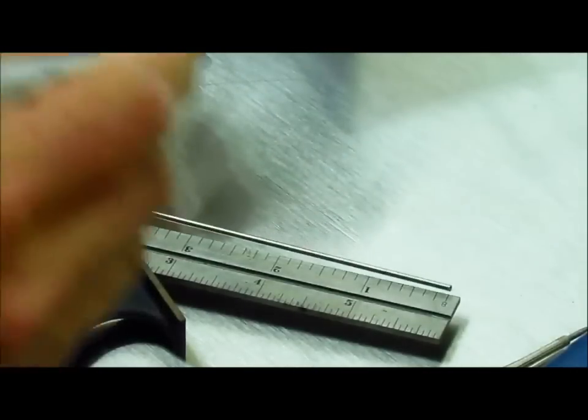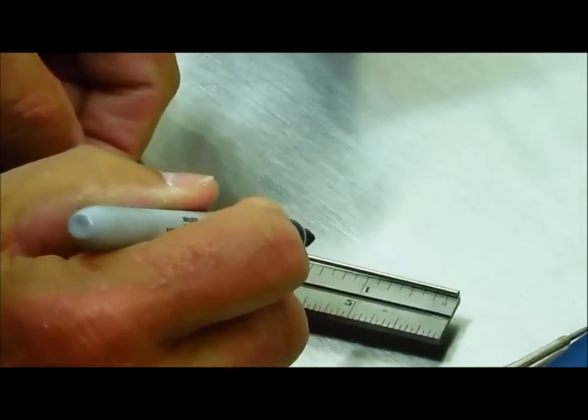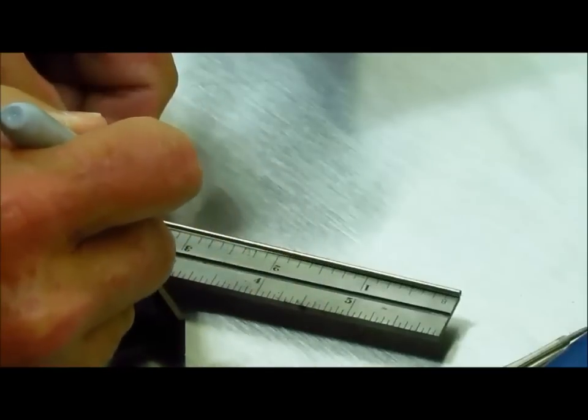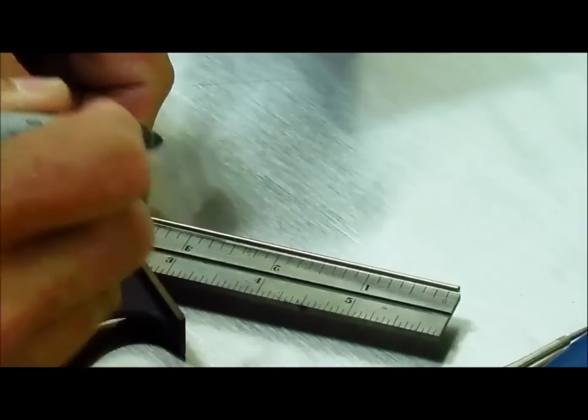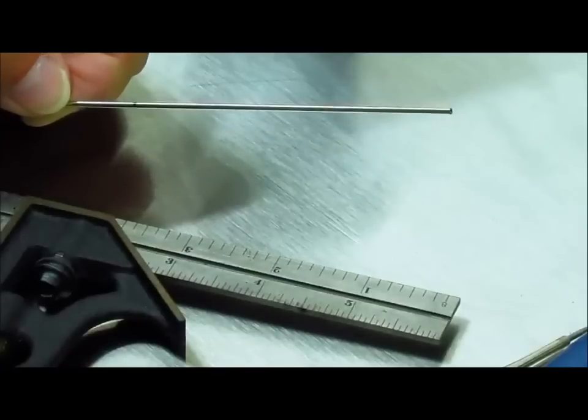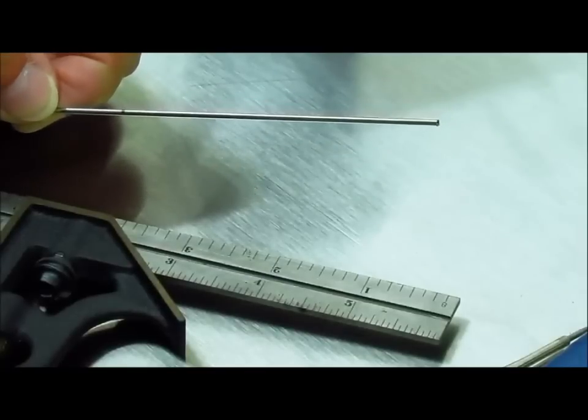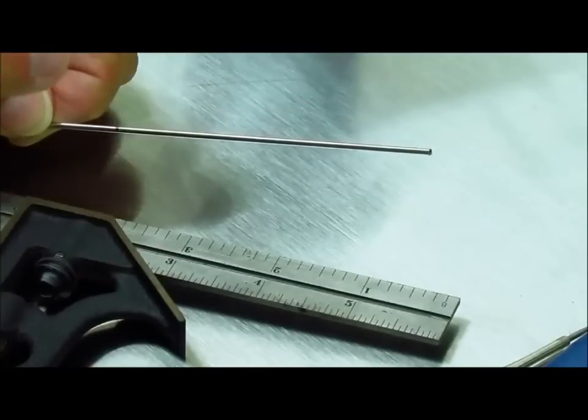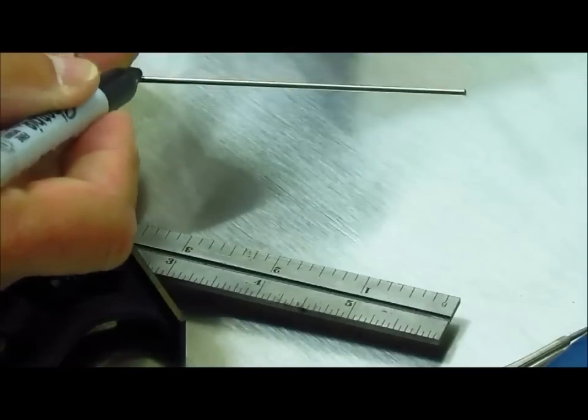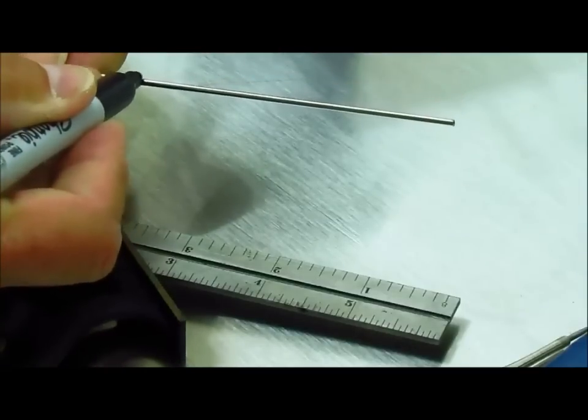The next step is to mark your tubing where you want to make the cut. Making sure that it's even with the end of your rule you want to put a small mark at three and a half inches. Now if you want to just cut a piece that's generally three and a half inches that's fine. But in our case we want it to be exactly three and a half inches.